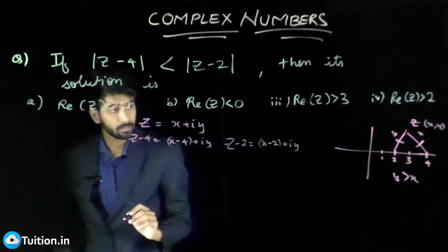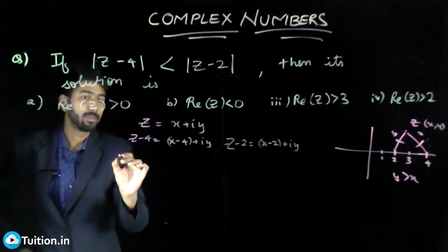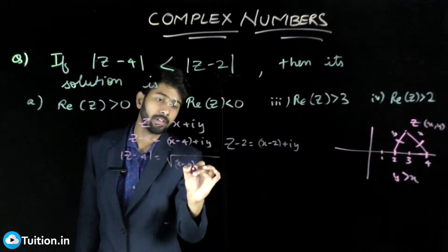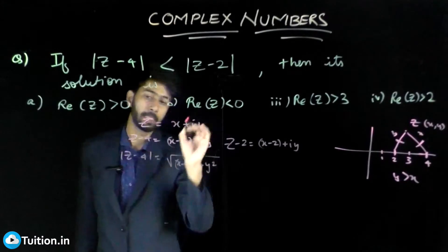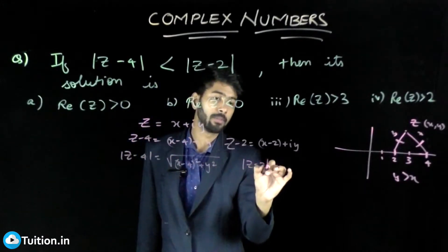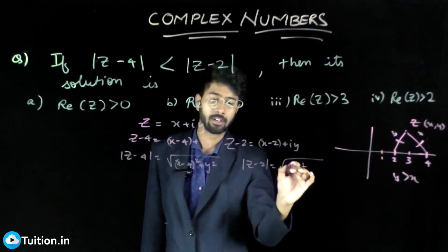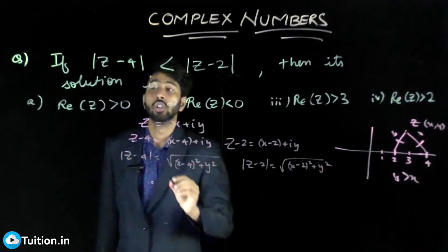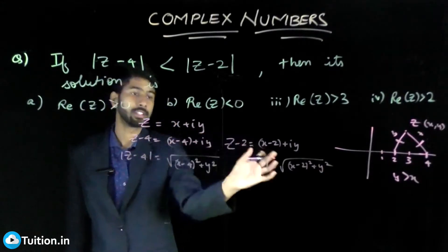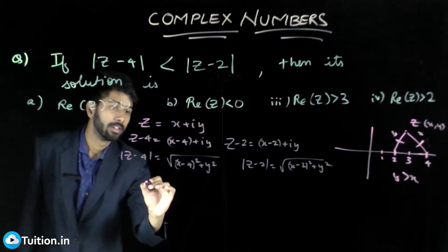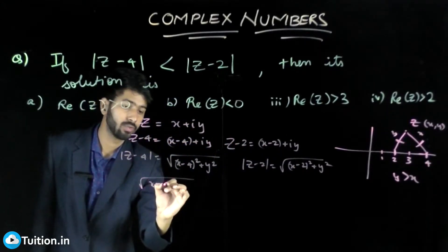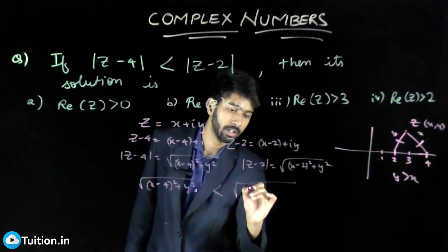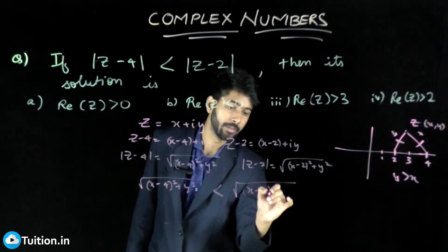What is |Z - 4|? It is nothing but √[(X - 4)² + Y²]. And |Z - 2| is nothing but √[(X - 2)² + Y²]. What you are told now is that this mod has to be less than this mod, so √[(X - 4)² + Y²] should be less than √[(X - 2)² + Y²].